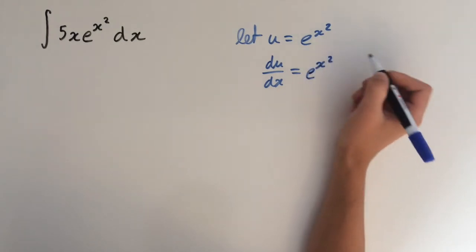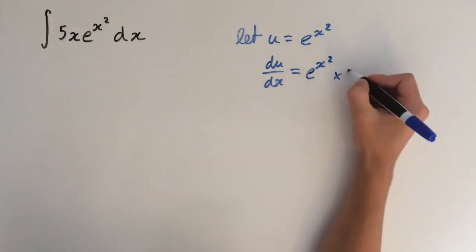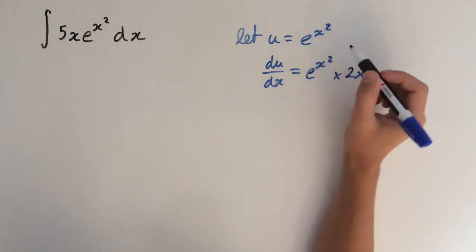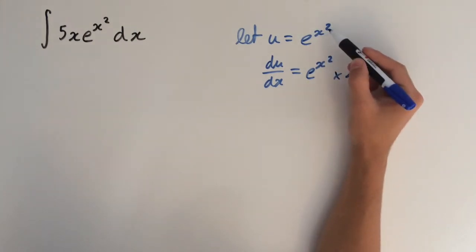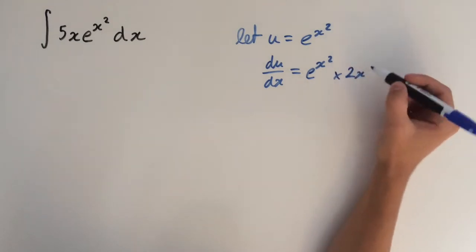So we're going to get e to the x squared times 2x, so the whole function, then the derivative of inside the function. So the derivative of e to the x squared is just 2x.